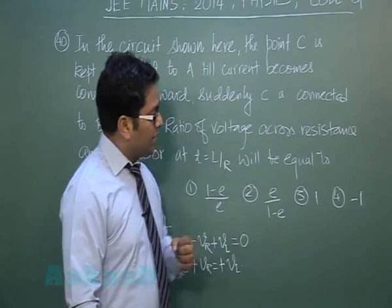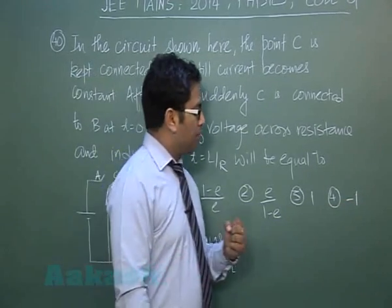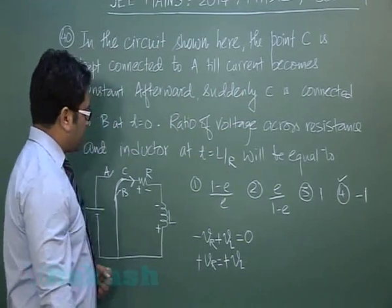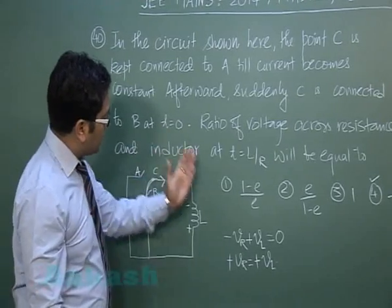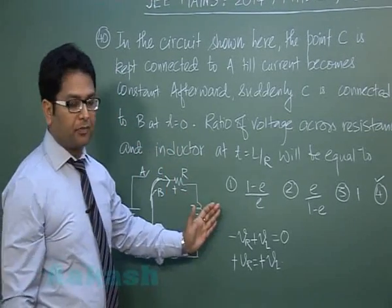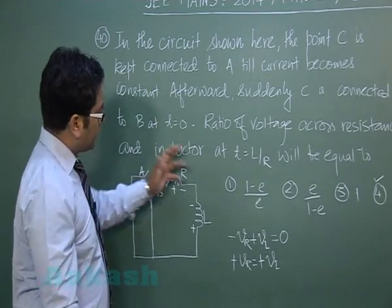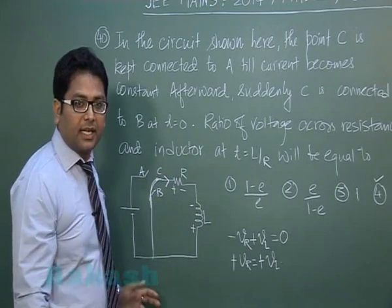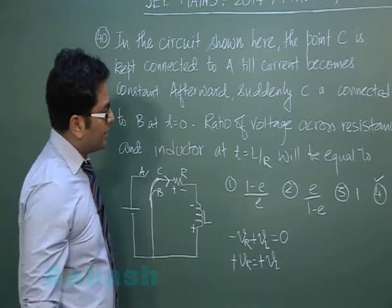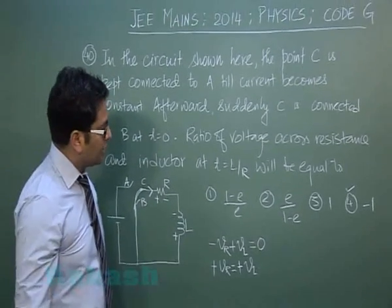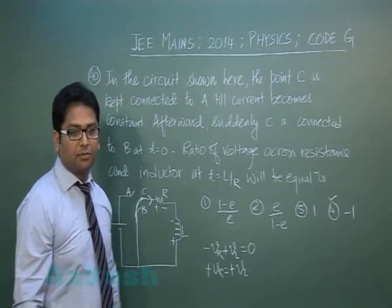In our opinion, we would gravitate more towards minus 1, considering that when you write KVL across the loop, you get a positive voltage and a negative voltage. Finally, the ratio would be minus 1. Otherwise, in terms of magnitude, it would be 1.